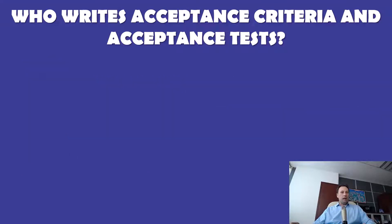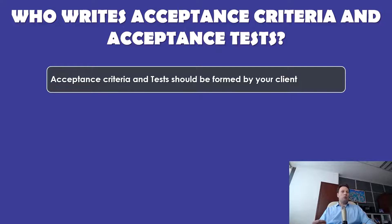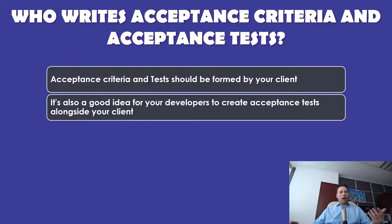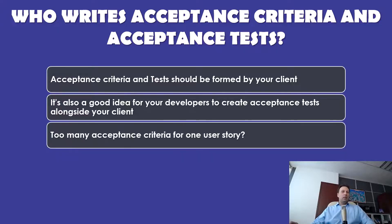Who writes acceptance criteria and acceptance tests? Acceptance tests and criteria should be formed by your client. However, it's also a good idea for your developers to create acceptance tests alongside your client. This allows your client to give input on how they want to see the requirement working, and it gives your developers the ability to work through what each requirement looks like from the user's perspective. Your client gets a big say in what the product does, and the developers can visualize how each feature will be built. Thinking through each requirement like this will also help you avoid creating an epic user story — too many acceptance criteria for one user story probably suggests you could break that user story up a bit more.